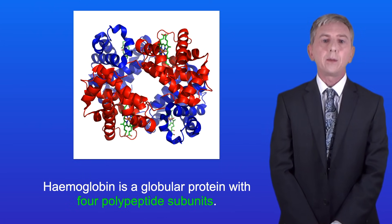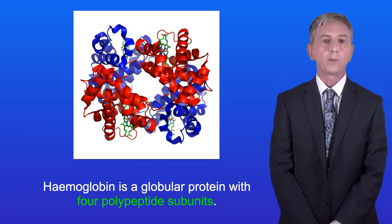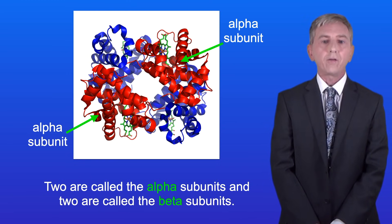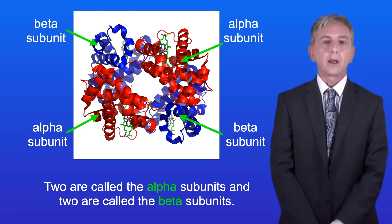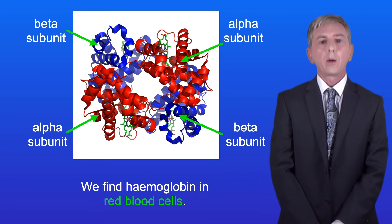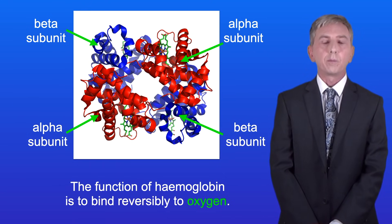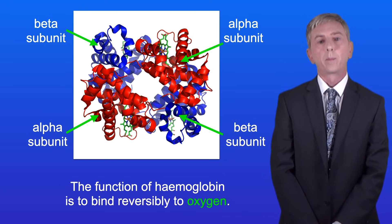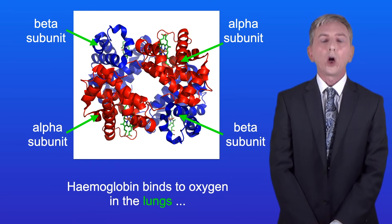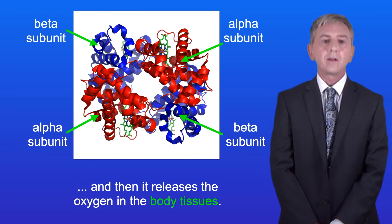Haemoglobin is a globular protein with four polypeptide subunits — two are called the alpha subunits and two are called the beta subunits. We find haemoglobin in red blood cells, and the function of haemoglobin is to bind reversibly to oxygen. Haemoglobin binds to oxygen in the lungs and then releases the oxygen in the body tissues.